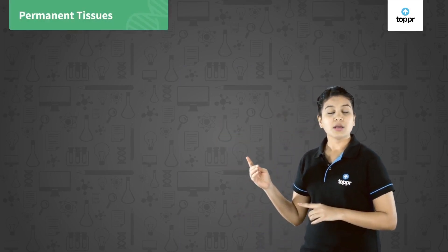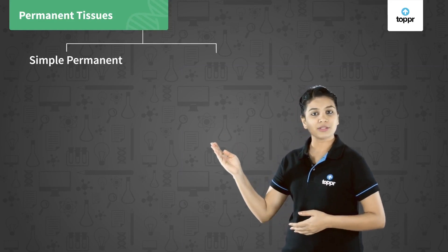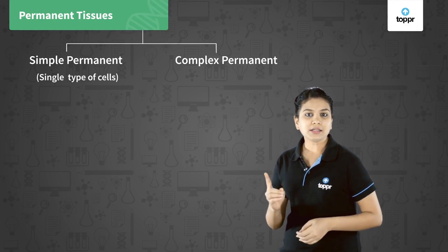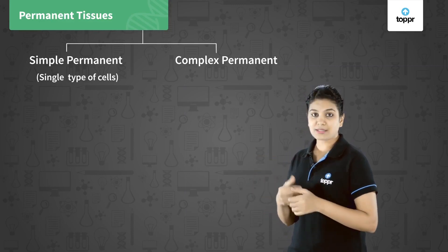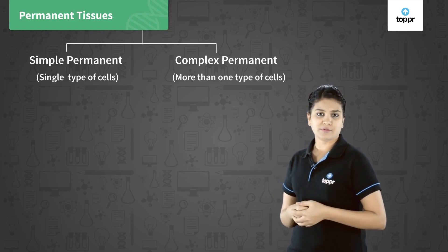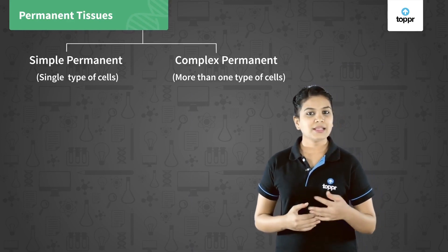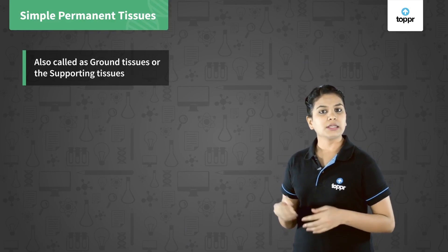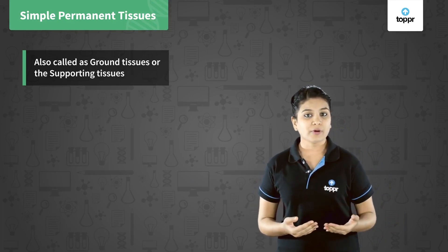Moving forward, let us discuss more about the permanent tissues. On the basis of number of cells, permanent tissues are divided into two major categories: simple permanent tissues and complex permanent tissues. Simple permanent tissues are made up of only a single type of cells that are structurally and functionally similar. Complex permanent tissues are made up of more than one type of cells that are structurally different but functionally similar. Simple permanent tissues are also called ground tissues or supporting tissues, as they form most of the bulk of the plant and provide a lot of support.